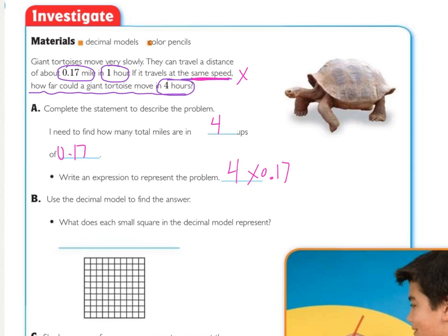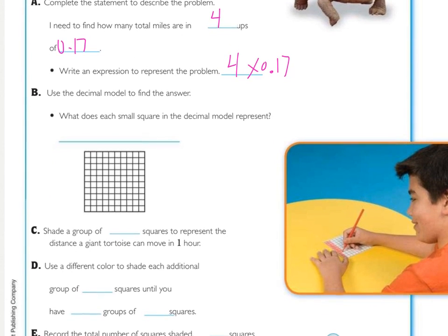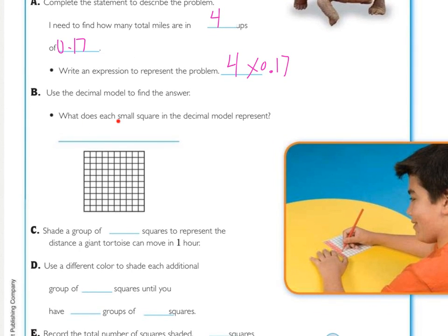Now we're going to use the decimal model to find this out. Before we do that, we need to know what does each small square in the decimal model represent? Each of these little squares, there's a hundred of them in there, so these all represent a hundredth, and that's with a th. The first thing that we do is we need to shade a group of 17 hundredths.